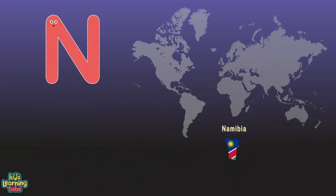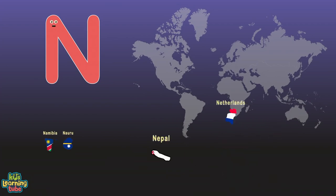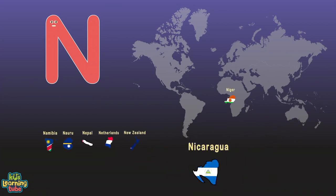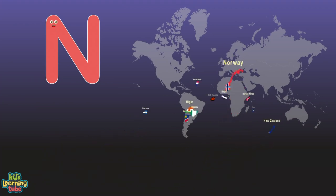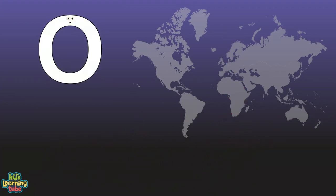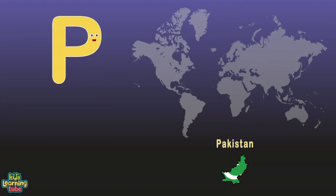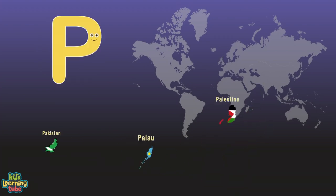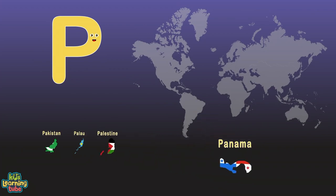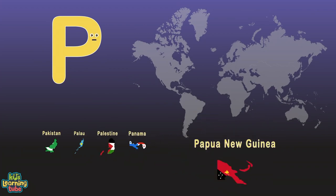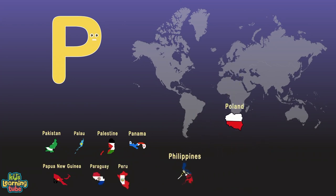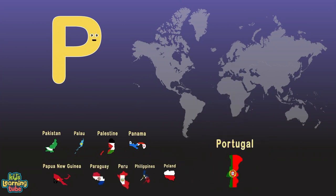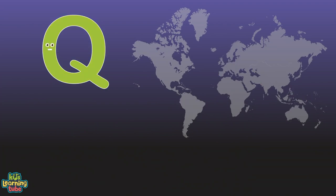N is for Namibia, Nauru, Nepal, Netherlands, New Zealand, Nicaragua, Niger, Nigeria, North Korea, North Macedonia, Norway. O is for Oman. P is for Pakistan, Palau, Palestine, Panama, Papua New Guinea, Paraguay, Peru, Philippines, Poland, and Portugal. Q is for Qatar.